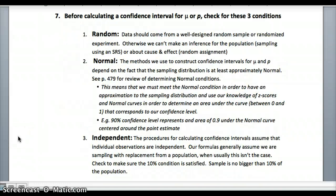Conditions to check. First, it needs to be random. Data should be a well-designed sample. All that stuff we talked about at the beginning of the year. To avoid bias, you need to be sampling from using an SRS and random assignment for cause and effect.